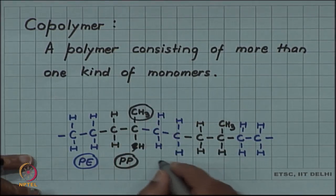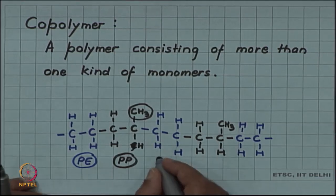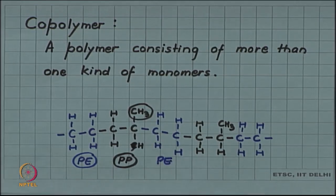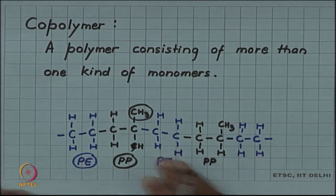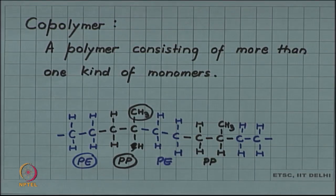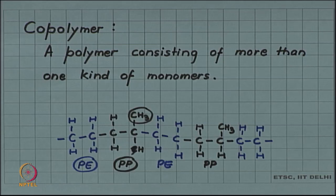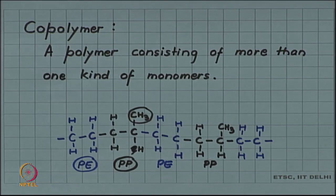Then again you have polyethylene and then polypropylene. So in the same chain you can have monomers of polyethylene and polypropylene. This will be a copolymer of polyethylene and polypropylene.